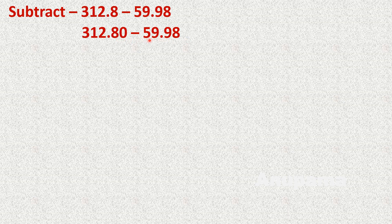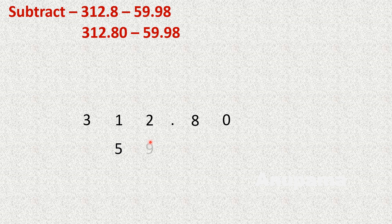Now there are two decimal places in both numbers. We write them in column form: 312.80, then 59.98, remembering that 9 is at the ones place and 5 is at the tens place — so we write 9 under the ones column and 5 under the tens column.